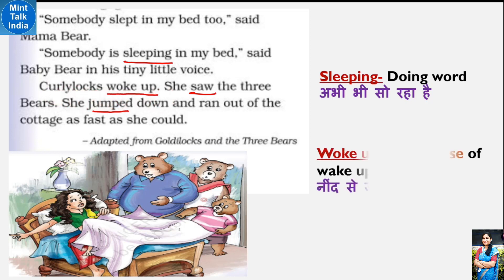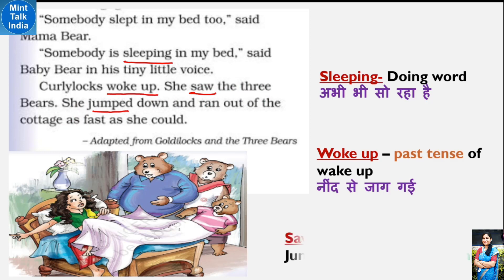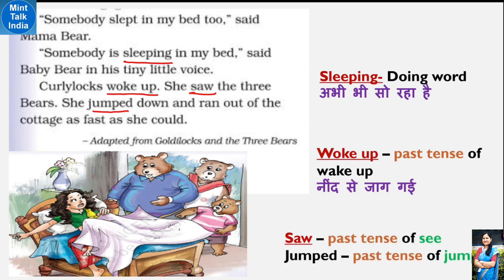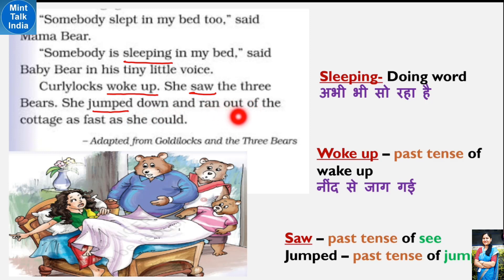Itni aawaz sun ke Curly Locks ki neend khul gayi. Curly Locks woke up - 'woke up' matlab neend se jaag jaana, past tense of 'wake up'. She saw the three bears - usne teen bears ko dekha, teen bhaalu ko dekha. 'Saw' past tense of 'see'. She jumped down and ran out of the cottage - woh koodkar neeche aa gayi, 'jumped' past tense of 'jump'. Aur zor se bhaagkar bahar chali gayi - out of the cottage, us chote se ghar ke bahar - as fast as she could, itni jaldi jitna ki usse ho sake.